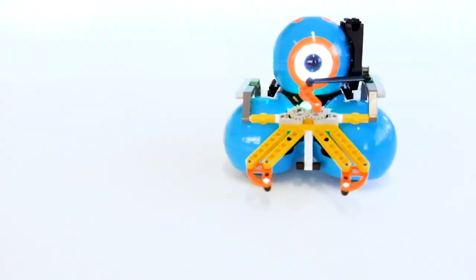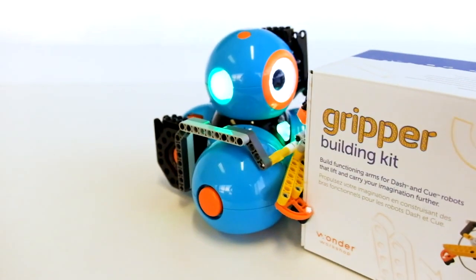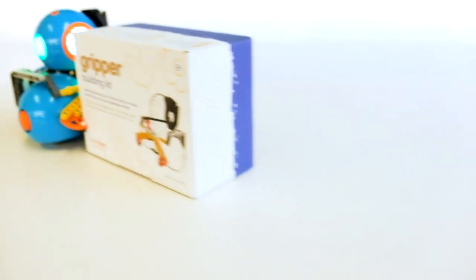Introducing the Gripper building kit for Dash and Cube robots. With this kit, you get to build a new accessory for your robots, a gripper that you can program to pick up and transport objects.